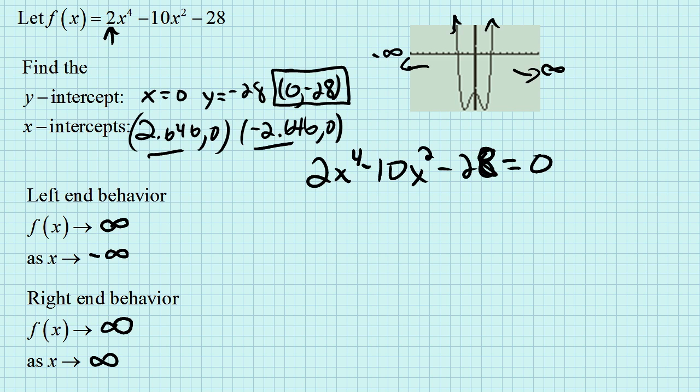We can do that by first recognizing that all these coefficients are even. It'll make it easy to take that 2 out, leaving us with x to the fourth minus 5x squared minus 14. It's going to be equal to zero.